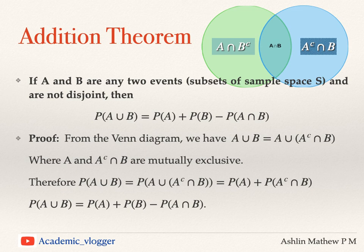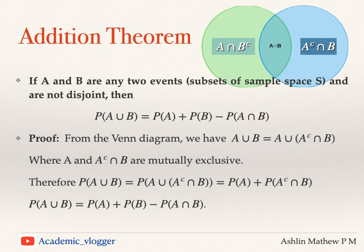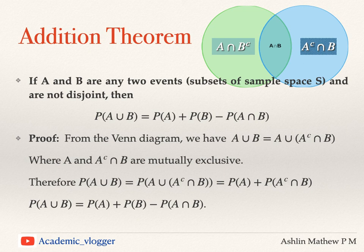The probability of A union B is equal to the probability of A union (A-complement intersection B). Since A and A-complement intersection B are mutually exclusive, we can use the additive axiom — the axiom of additivity from the axiomatic definition of probability — giving us probability of A plus probability of A-complement intersection B.